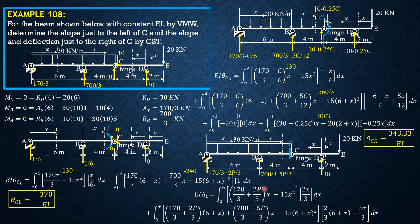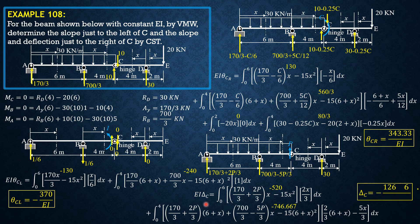Prior to integration, note P was invented so set P equals zero. Integral from 0 to 6 of (170/3·x minus 15x²)·(2/3·x) equals negative 520. Integral from 0 to 4 of (170/3·(6+x) plus 700/3·x minus 15·(6+x)²) times the simplified derivative evaluates to negative 746.667. Combining: δ_C equals negative 1266.67/EI. That's it for this problem. Thank you.